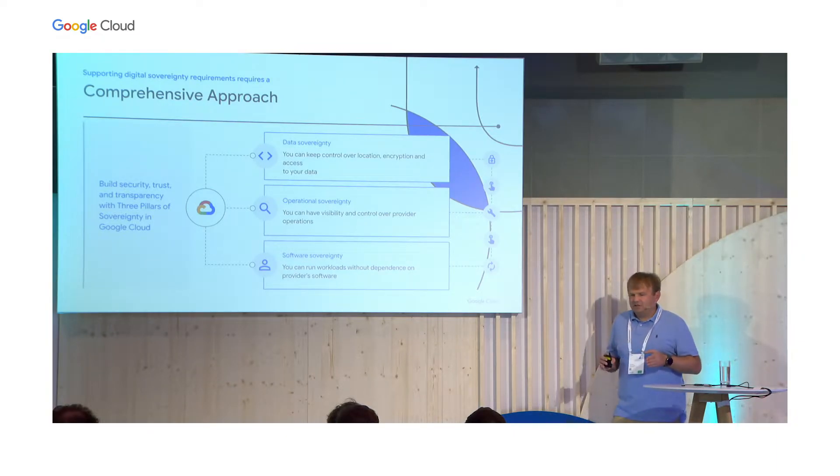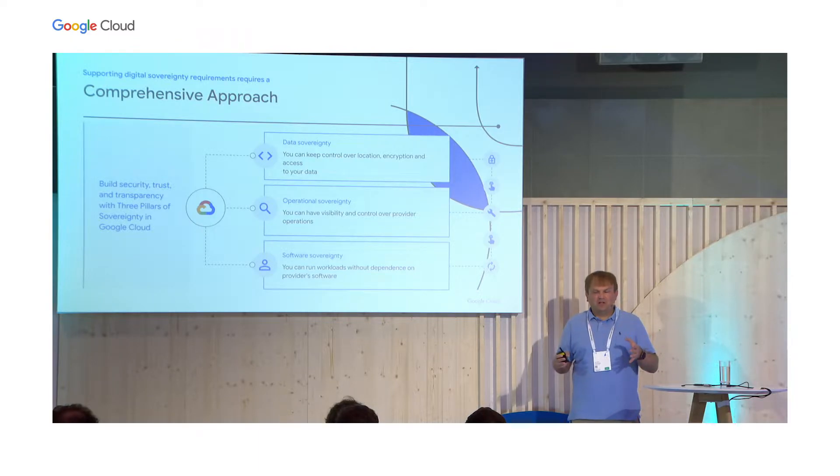But data controls are just one element of a comprehensive digital sovereignty approach. At Google Cloud, we have broken it down into three clear pillars. The first pillar is data sovereignty — giving customers full control over their core customer content and data. Additionally, we want to provide the ability to store and manage encryption keys outside of GCP infrastructure, so customers can protect their data while still enjoying the scale, innovation, and security of public cloud.